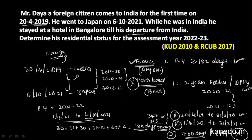Therefore, he is a Not Ordinarily Resident for the assessment year 2022-23, as he satisfies one of the basic conditions but does not satisfy both the additional conditions. So that is the answer.